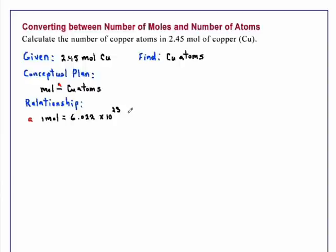And in this case, we're dealing with copper atoms. So that number is known as Avogadro's number.